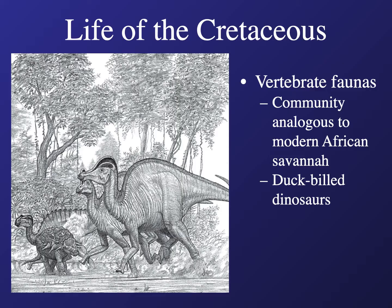During the Cretaceous there would have been a lot of different vertebrates on land, and their communities would have been probably similar to a modern African savanna — picture grassland-like areas with little clumps of trees, with duck-billed dinosaurs and ankylosaurs traveling around the landscape.